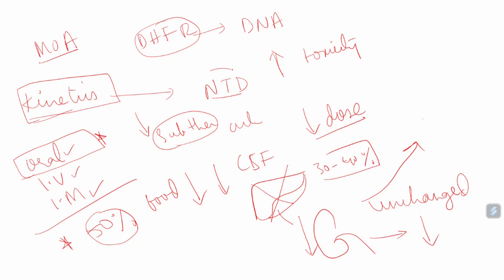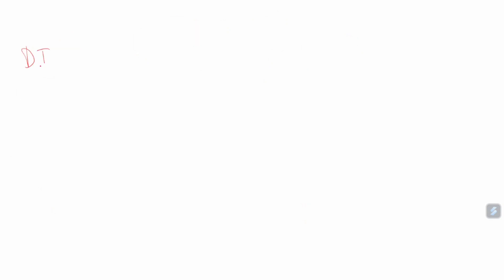As methotrexate is a narrow therapeutic drug, if a patient has cirrhosis or hepatitis, restrict the dose. If a patient has chronic kidney disease, decrease the dose. These are important pharmacokinetic considerations. Drug interactions with methotrexate are also very important.